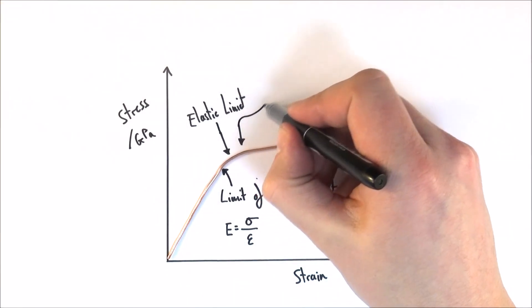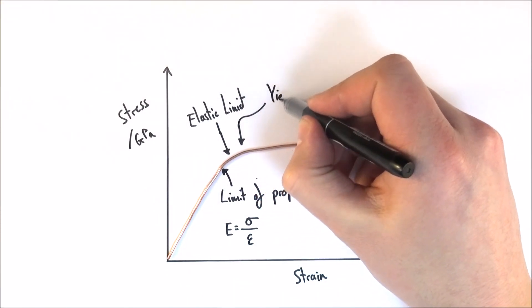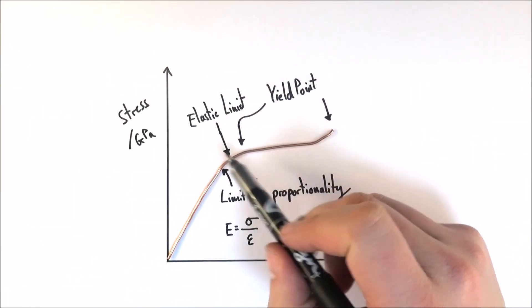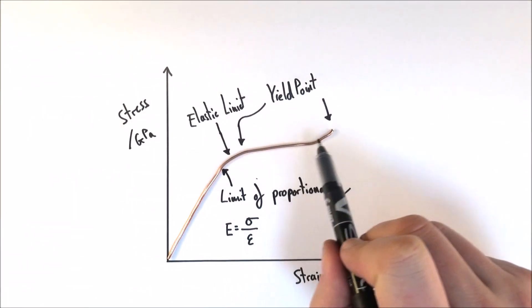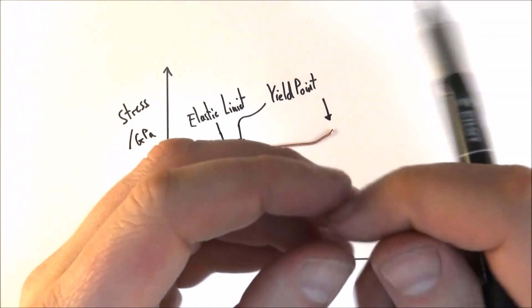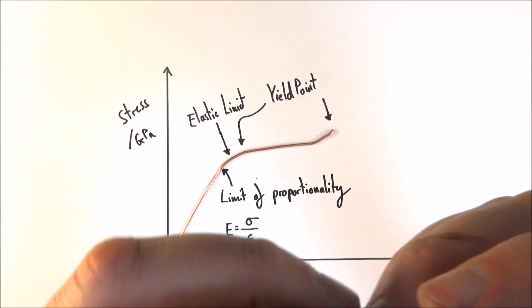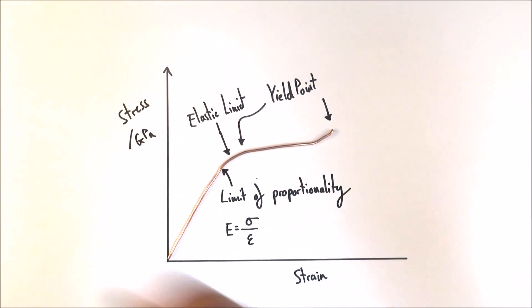Just beyond that, what we get to is the yield point, and the yield point is when you have such a stress that you then get a very large strain forming. It's a bit like a piece of blue tack: when you pull it, you get to a point where it suddenly gets longer and longer and not much force is needed.